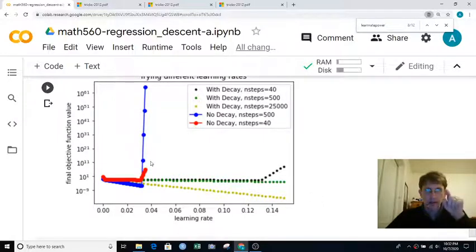Alright, so I see this red and this blue is the graph we saw before with no learning rate decay, and now we're seeing stable behavior with learning rate decay for much larger values of the learning rate. So that's good. Larger values of the learning rate usually give us faster steps, or faster progress toward the goal.